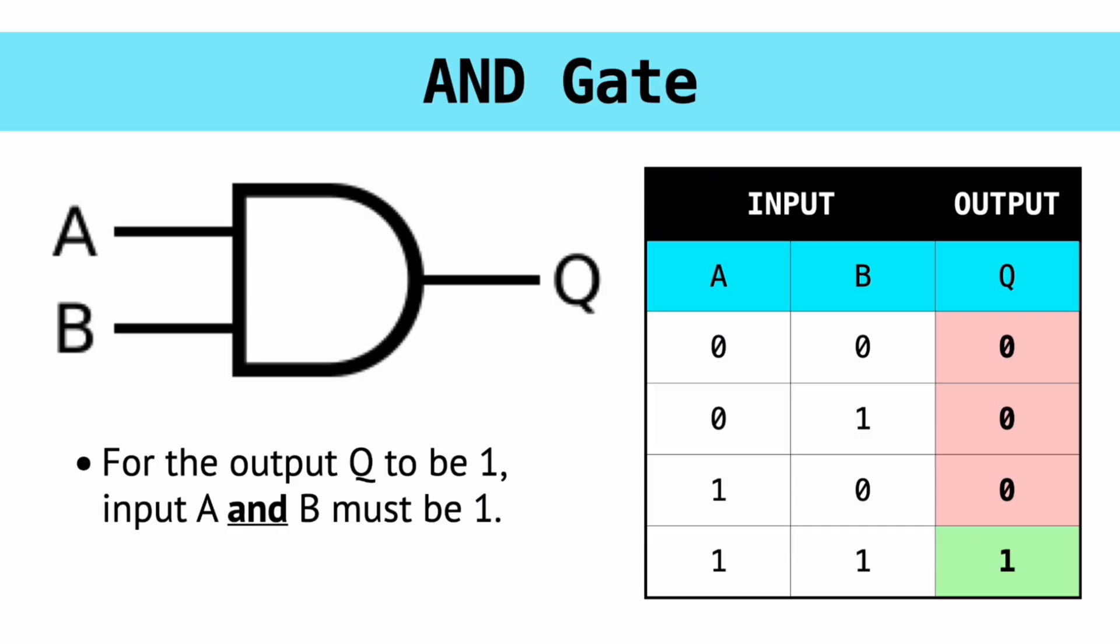For example, if A is 0 and B is 1, the output will still be 0 because the condition of this gate is that A AND B have to be 1. That's why it's called the AND gate.